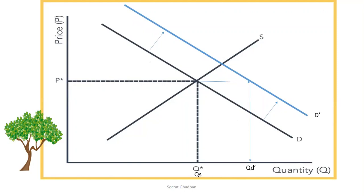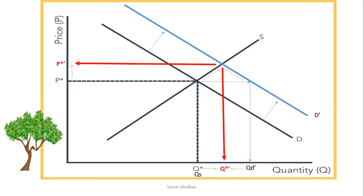This is why this will encourage the suppliers to increase their production. However, in order to increase their production, they have to increase their price. So here the price will increase, leading to greater quantity supplied. And since the price increased, the quantity demanded will decrease. This is why we will reach a new point of equilibrium with P-star prime and Q-star prime. The new price of equilibrium is higher, and the new quantity of equilibrium is also higher.